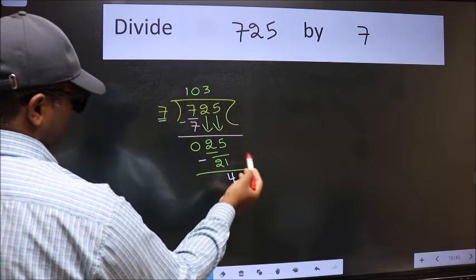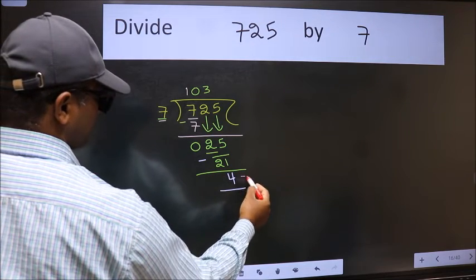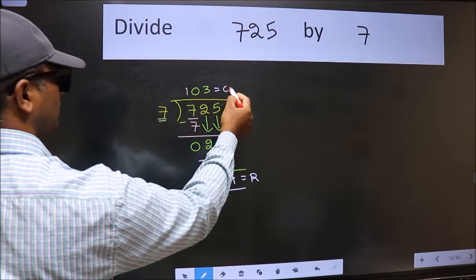No more numbers to bring down, so we stop here. This is our remainder and this is our quotient.